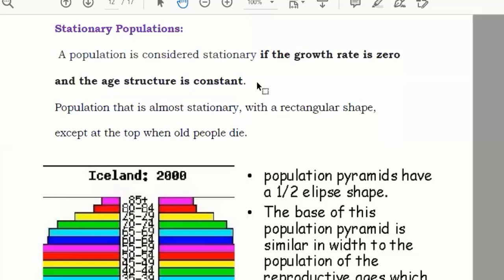After that we have stationary populations. Stationary, from the name we can say, a population is considered stationary if the growth rate becomes zero. What does it mean? It means the number of people born equals the number of people who die.